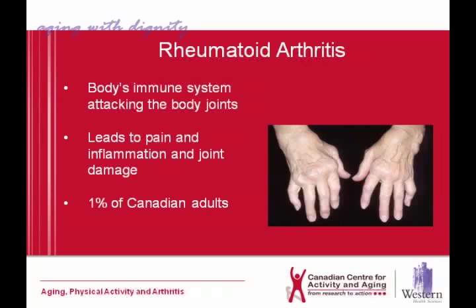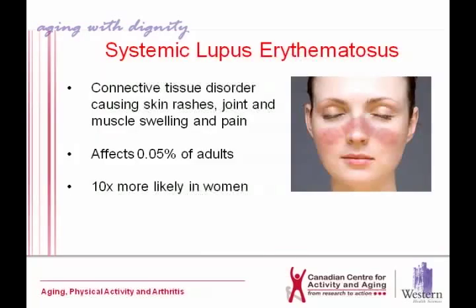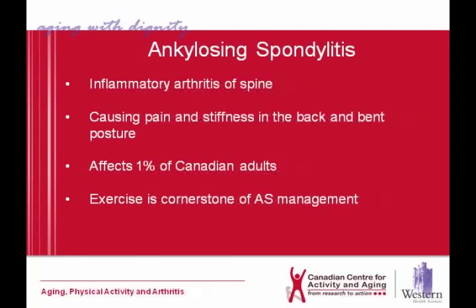Rheumatoid arthritis can be partially controlled, and it is suffered by about 1% of the Canadian population. The second type we were talking about is lupus. One sign of lupus is a skin rash across the face. Researchers have found that women suffer from lupus tenfold more than men, which suggests a hormonal factor is involved. Ankylosing spondylitis can be controlled, and exercise is a key cornerstone to help avoid this particular disease.